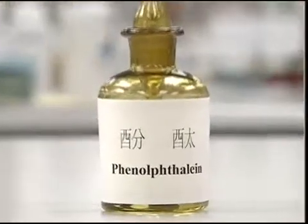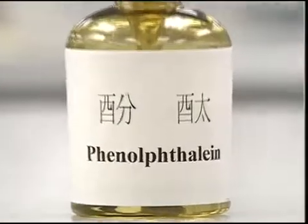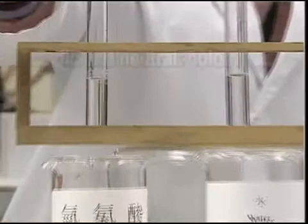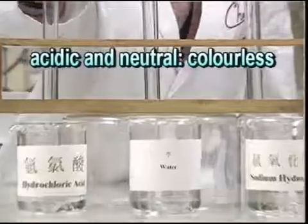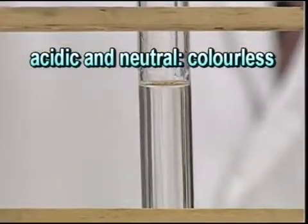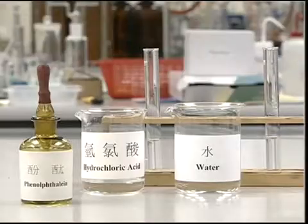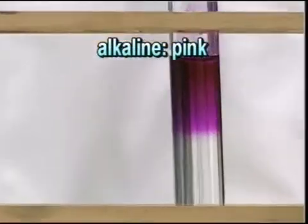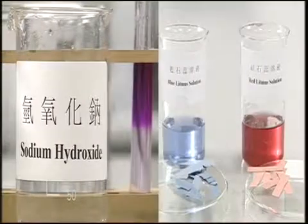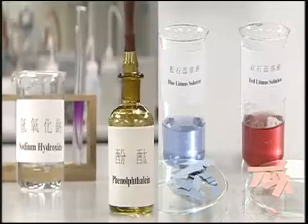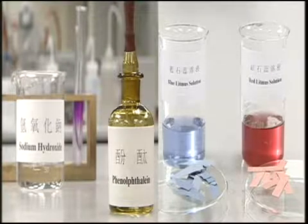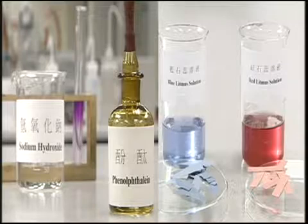Another common indicator in the laboratory is phenolphthalein. This is colorless when affected by an acidic or neutral substance, but turns pink when it comes into contact with an alkaline material. However, neither litmus nor phenolphthalein tells us the degree of acidity or alkalinity of a substance.